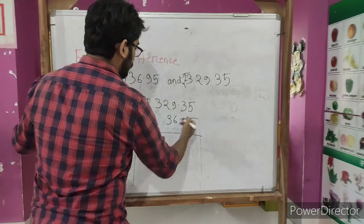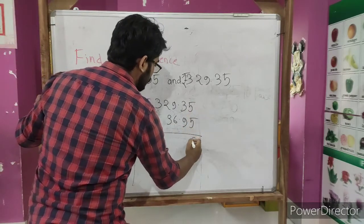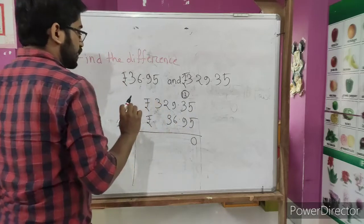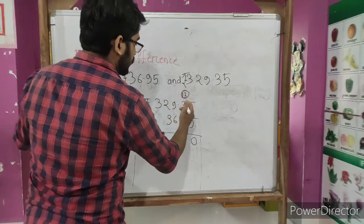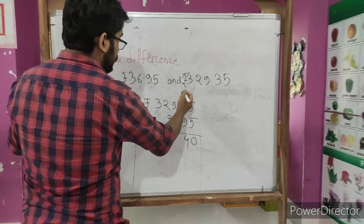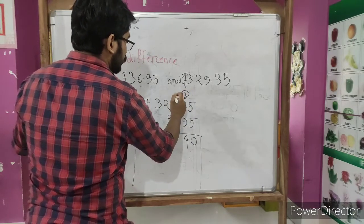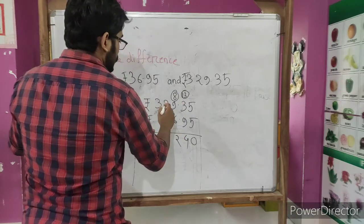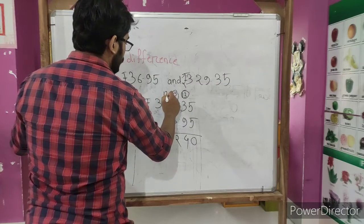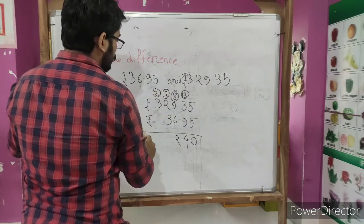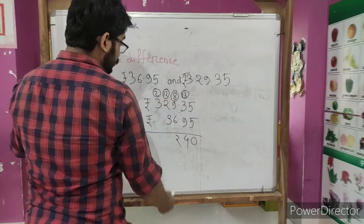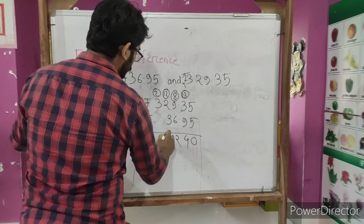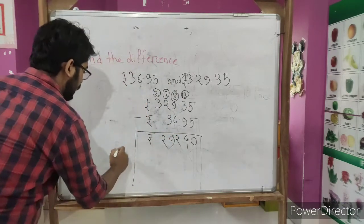From 5, 5 can be subtracted easily: 5 minus 5 equals to 0. After that we will take this one as 13. From 13 we need to subtract 9, so answer will be 4. And after that, 1 has been borrowed from 9, so 9 will become 8. So 8 minus 6 equals to 2. Now from 2, 3 can't be subtracted, so again we need to borrow 1 from 3, and 3 will become 2. So 12 minus 3 equals to 9. And 2 will be left here.